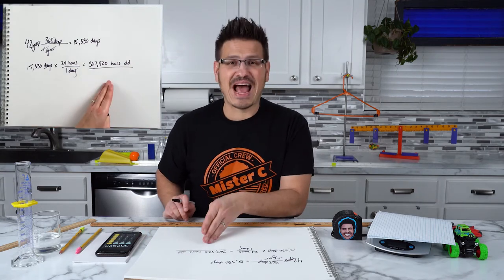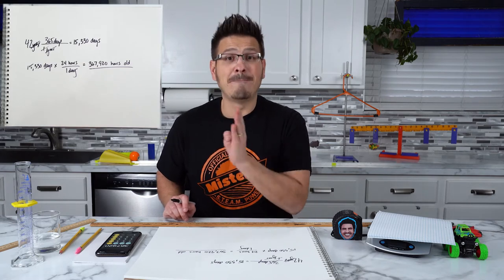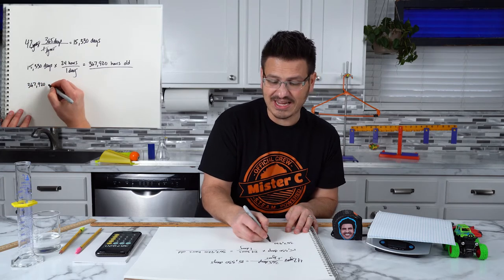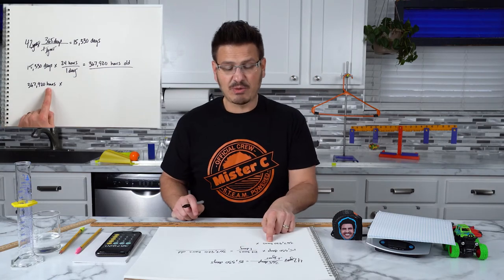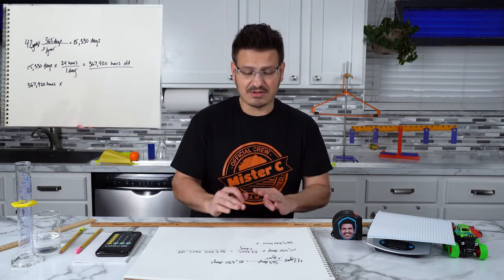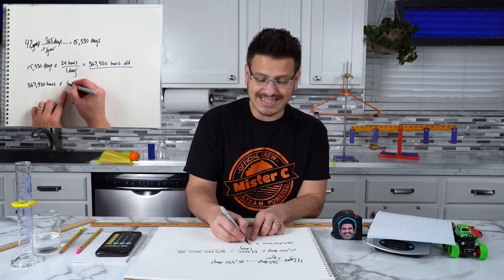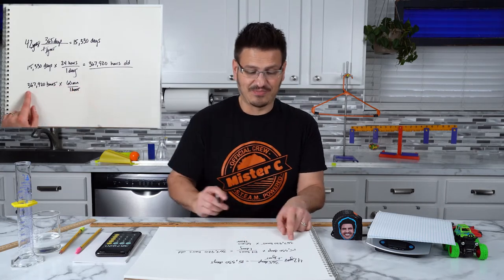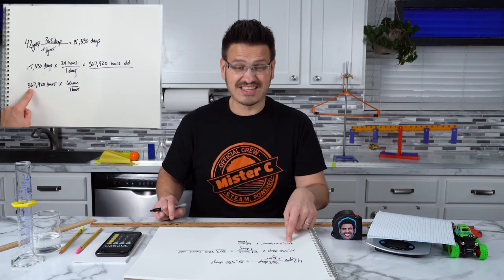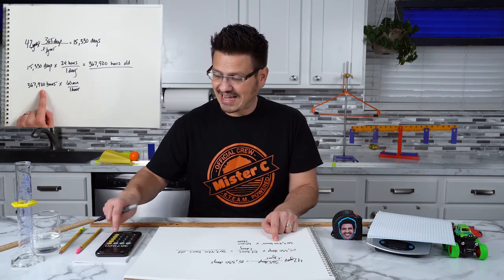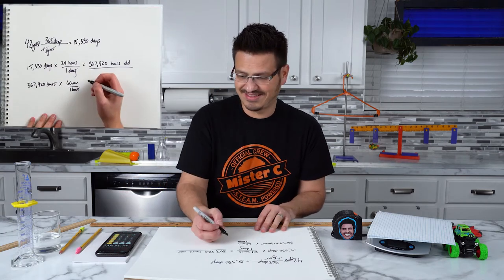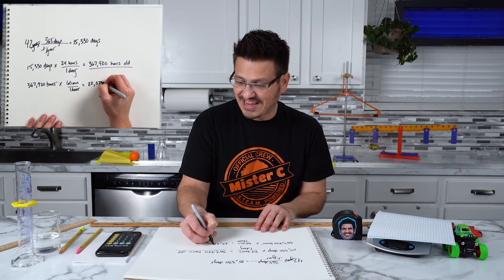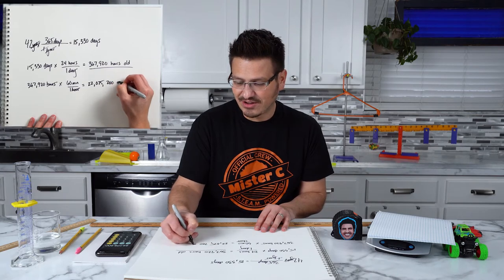But I don't want hours — I want seconds. So I'm going to convert to minutes next. We're going to take 367,920 hours and multiply. We want to get rid of the hours, so we're going to put minutes on top — there are 60 minutes in one hour. These cancel out, so 367,920 times 60 equals 22,075,200 minutes. The numbers keep getting bigger!